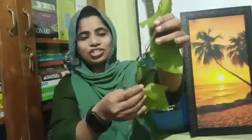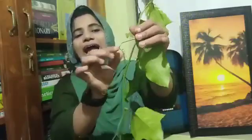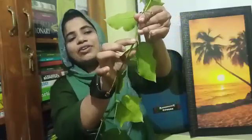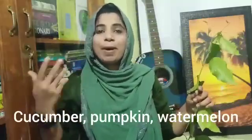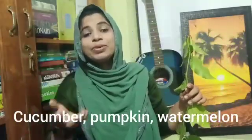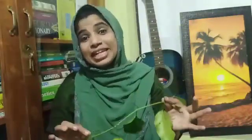Spirally coiled structures develop from the axillary bud. This is the axillary bud, for climbing. This is the cucumber, pumpkin, watermelon. This is the stem tendrils.